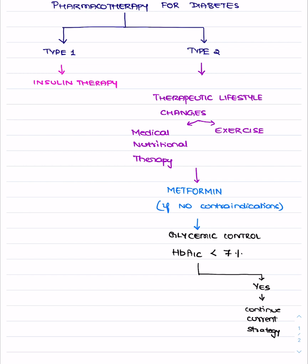If HbA1c is less than 7%, continue the current strategy of therapeutic lifestyle changes with dietary restriction along with metformin. If glycemic controls are not adequately controlled, you need to consider add-on therapy. The add-on therapy is used along with therapeutic lifestyle changes and metformin, and you will be adding one more drug — either insulin or another anti-diabetic agent.